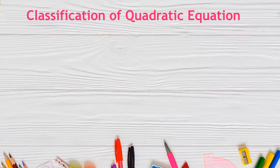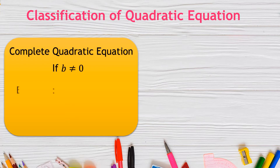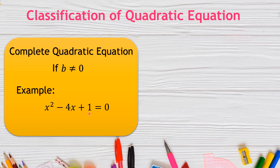There are two classifications of quadratic equations. The first is the complete quadratic equation, where b is not equal to 0. For example, x² − 4x + 1 = 0 has x² as the quadratic term, −4x as the linear term, and +1 as the constant term. Another example is 3x² + 2x − 1 = 0, where 3x² is the quadratic term, 2x is the linear term, and −1 is the constant term.